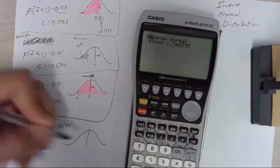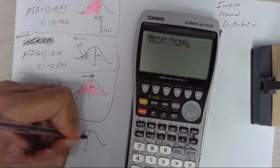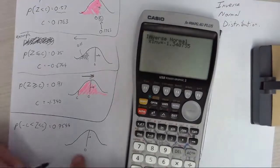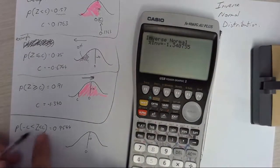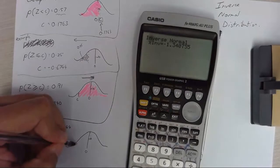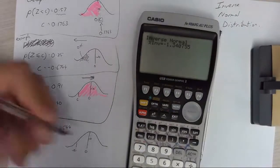We've got a normal distribution. 0, 1. Now there's some c value for negative and positive c. So there's c or negative c.